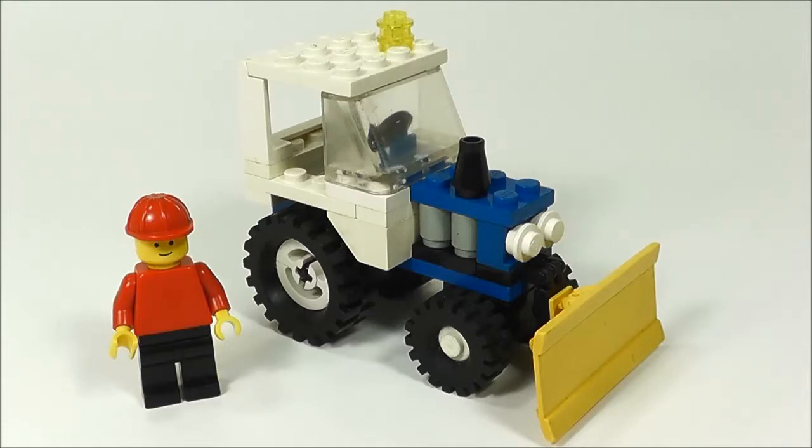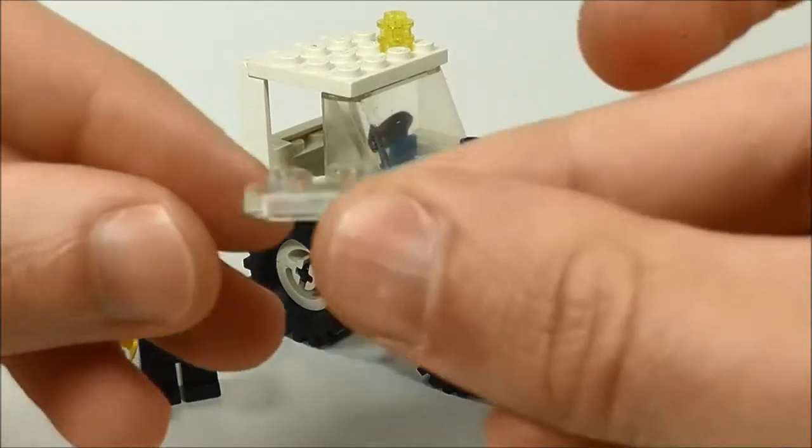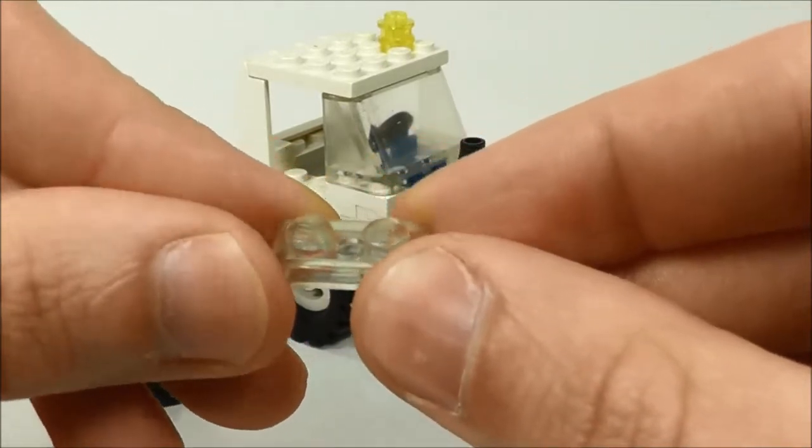And after doing some research I found out that it was the Blizzard Blazer and I had all the pieces to it. With the exception of one, if you look on the front of the tractor right there, right below the windshield, it's supposed to be these clear pieces. Unfortunately I only had one. So this set isn't 100% accurate.